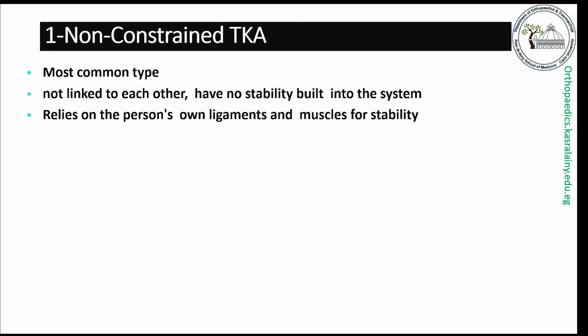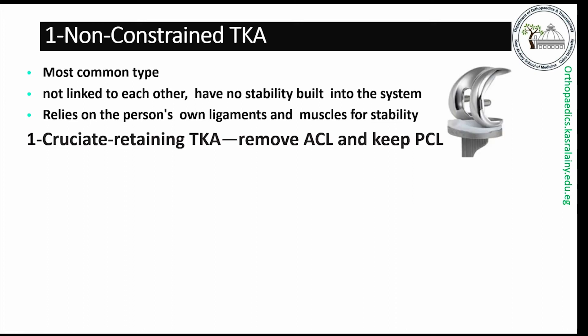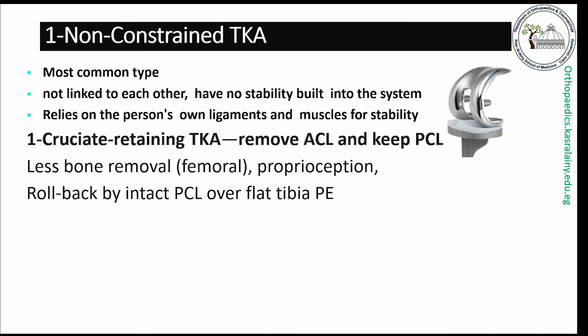The first type is the non-constrained device, which is the most commonly used. There is no linkage between the femoral and tibial parts and stability depends on the patient's own ligaments and muscles. The cruciate retaining variety removes the ACL while keeping the PCL, providing better proprioception, with the femoral rollback mechanism depending on the intact posterior cruciate ligament over a flat tibial polyethylene.